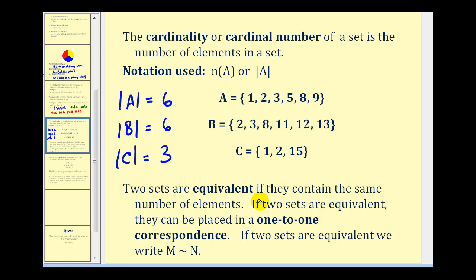Now two sets are equivalent if they contain the same number of elements. If two sets are equivalent, they can be placed in a one-to-one correspondence. So if two sets are equivalent, we write their equivalent using this notation here. So looking at these two sets here, we could say that set A is equivalent to set B because they have the same cardinality or the same number of elements.